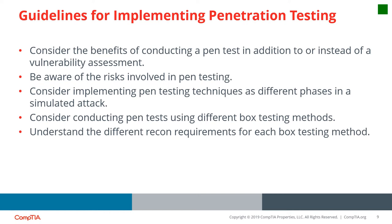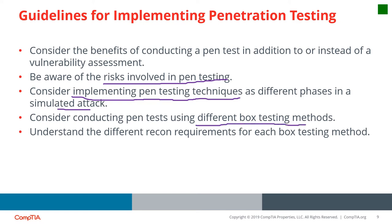Guidelines for implementing penetration testing include: setting a clear objective and knowing the main goal of why the test is conducted; knowing the benefits; knowing the risks involved; using a simulated environment especially for critical applications; and observing the importance of choosing the appropriate box method — white, black, or gray box. These are all things to consider when conducting a penetration test.